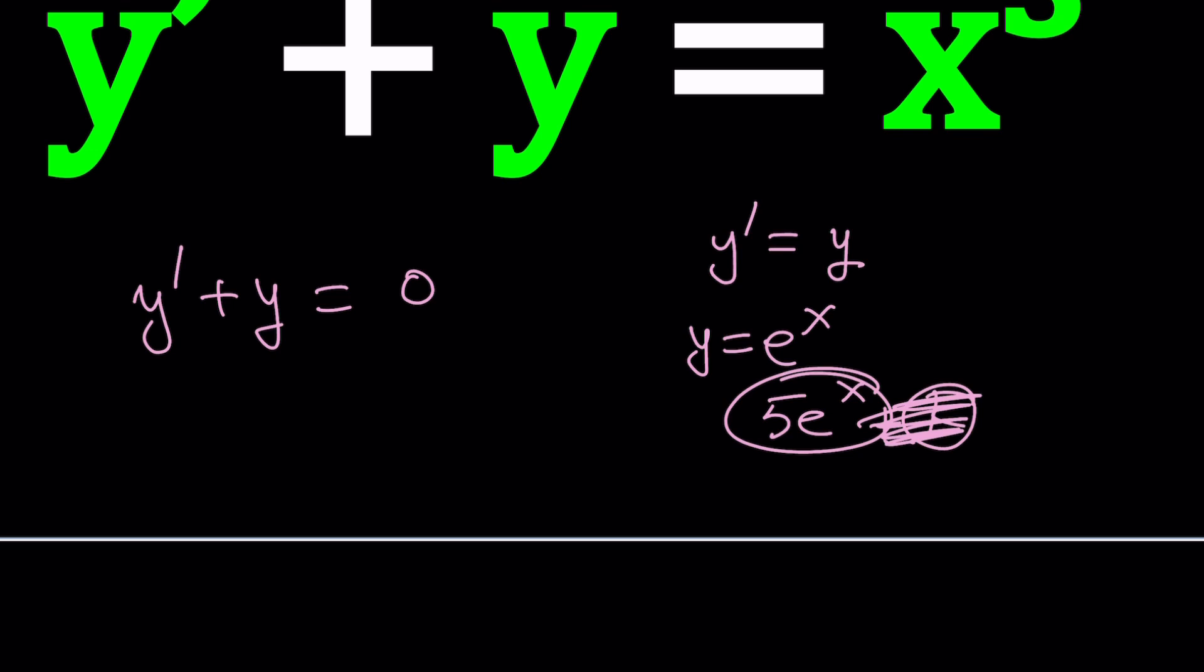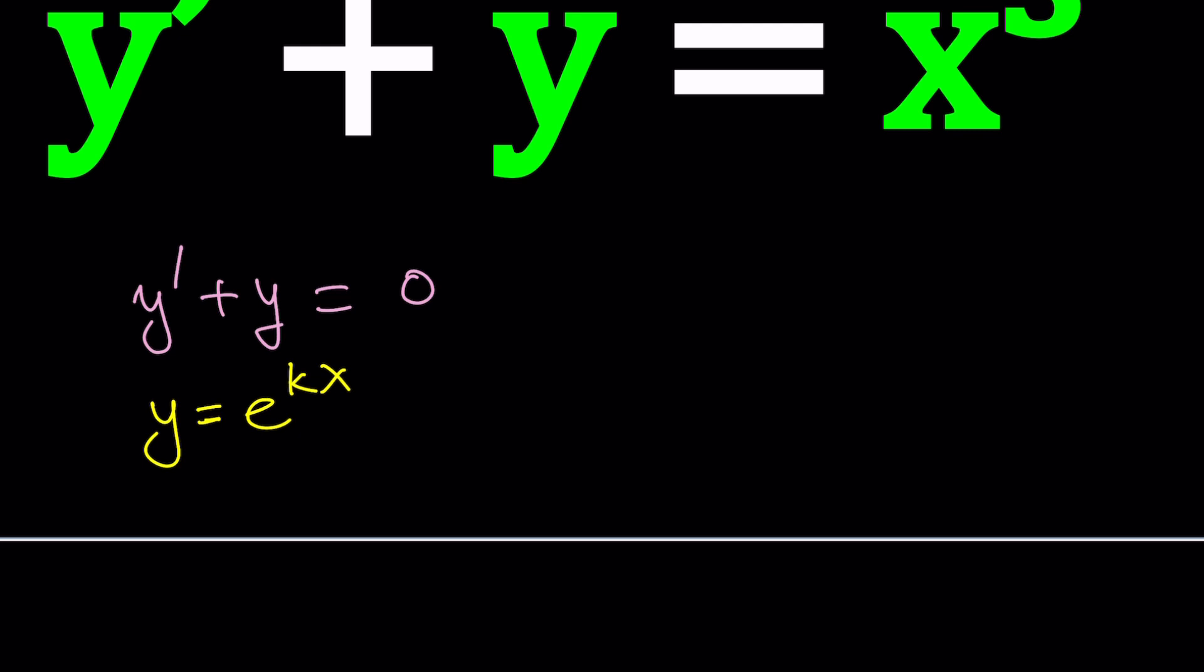You can do the following. Suppose y is e to the power kx. We can kind of go from this to finding the k. How do you find the k value? Wait, why did you use e to the power kx? Can it not be like k times e to the x? No, that's a solution for this one. This one is different. I don't have a constant, but that's perfectly fine. We'll take care of that later. We already know that if e to the x is a solution, k times e to the x or c times e to the x is also a solution.